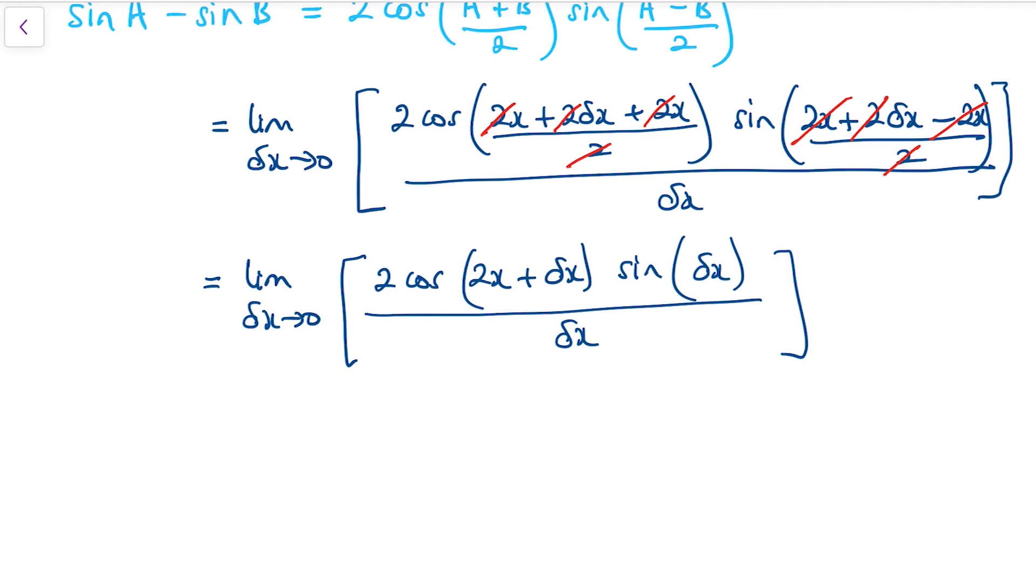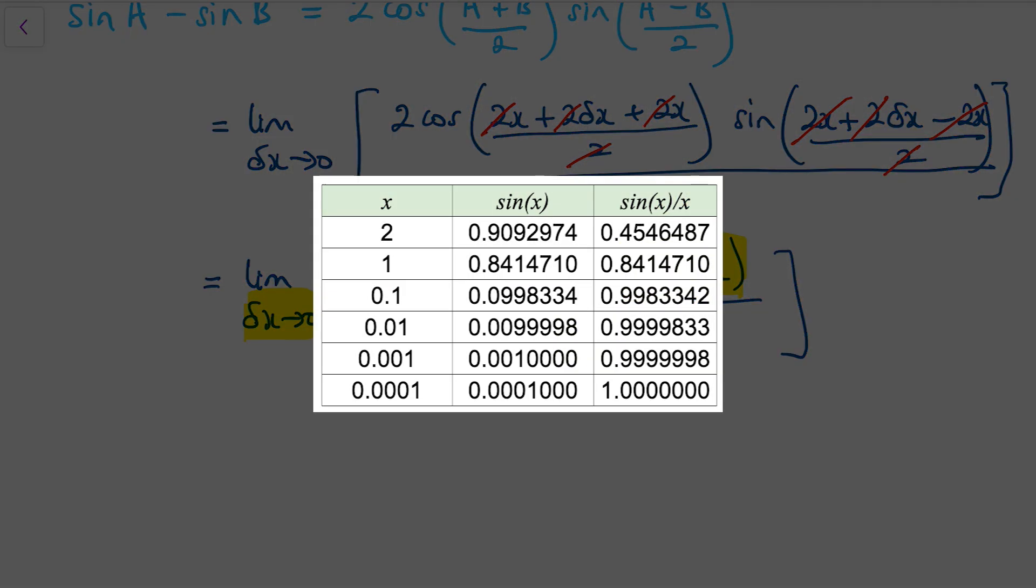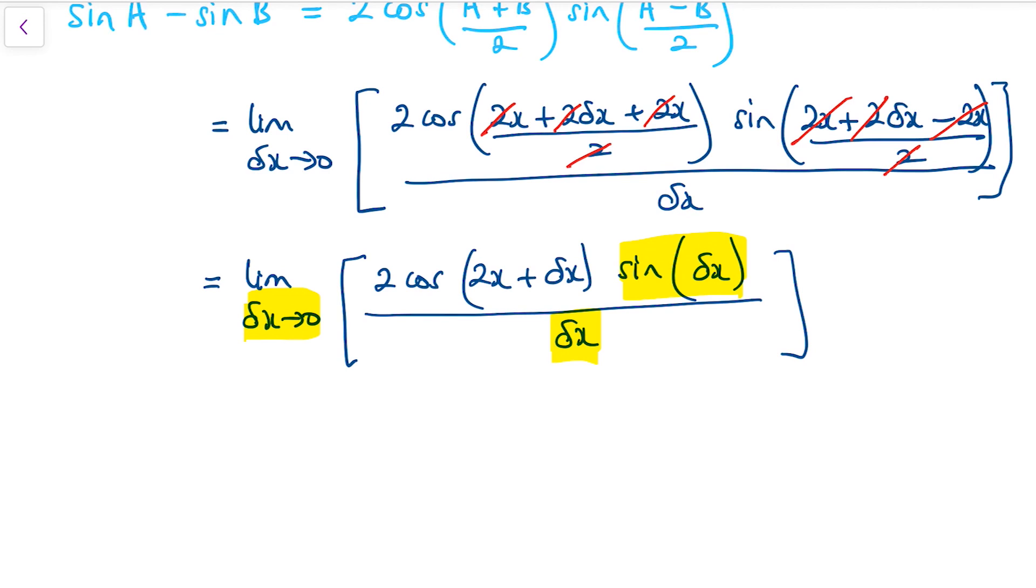Now looking at this limit, delta x tending to 0, I'm going to deal with sine of delta x over delta x. What I know is that as delta x tends to 0, sine delta x over delta x actually tends to 1. You can investigate if you wish—grab a calculator and put in a very small value for delta x, like sine of 0.0001 divided by 0.0001, and you'll find it tends to 1. So if this tends to 1 and this delta x tends to 0, what we're left with is just 2 cos 2x.